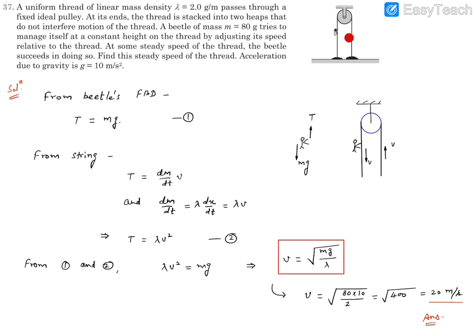Now how to get the string tension? The string is catching the mass from here and dropping the mass there. Let's consider here the mass is being added up. So whenever the mass is being added up or getting subtracted, then the force is given by dm/dt into v.